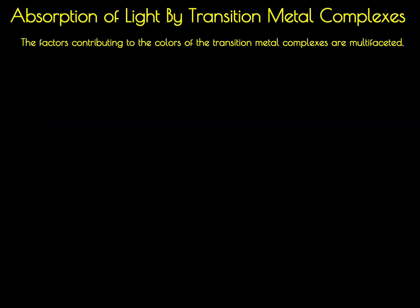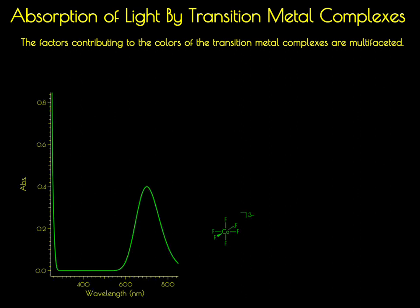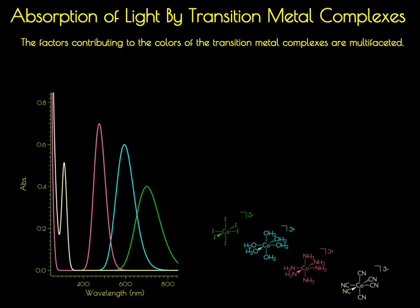Let's start by looking at the absorption of light by a transition metal complex. The factors that lead to the different colors of a transition metal complex are multifaceted. One of the major influences is the color of light — so the energy of light — that a complex will absorb. For example, cobalt-3 hexafluoride is green because it absorbs red light, so you see this broad absorption band in the low energy region of the UV-Vis spectrum. We can look at a series of cobalt-3 compounds and see that they all have different colors because they all absorb different wavelengths of light.